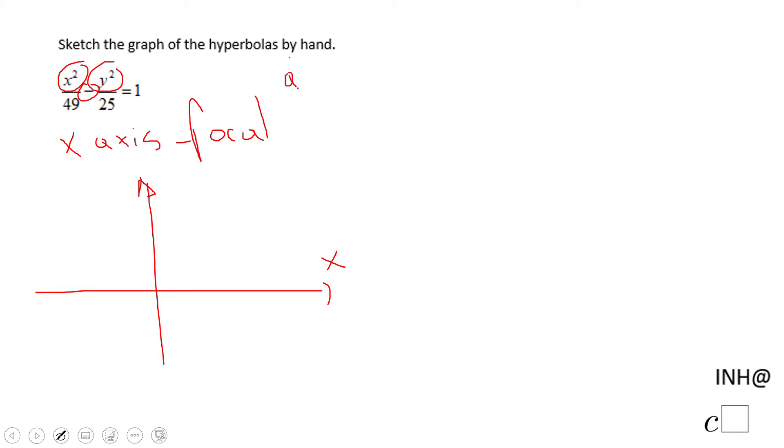a squared is 49, which is going to give me a equals plus or minus 7 because I'm taking square root. So on the x-axis you're going to go 7 right, 7 left, and you can graph now the hyperbola.